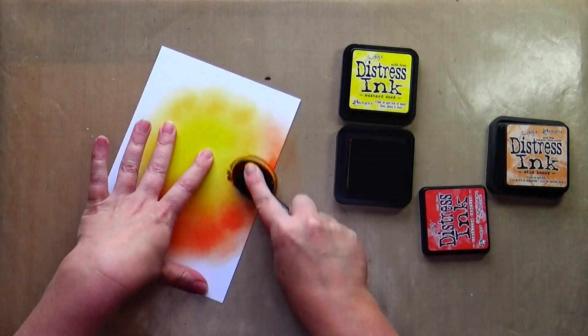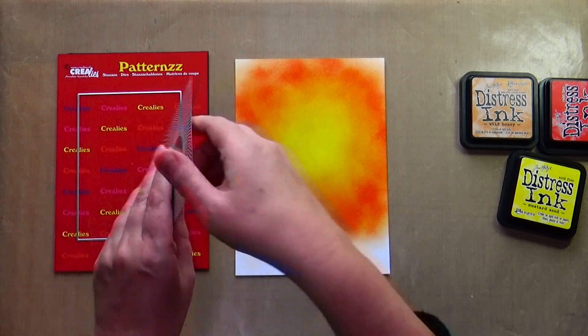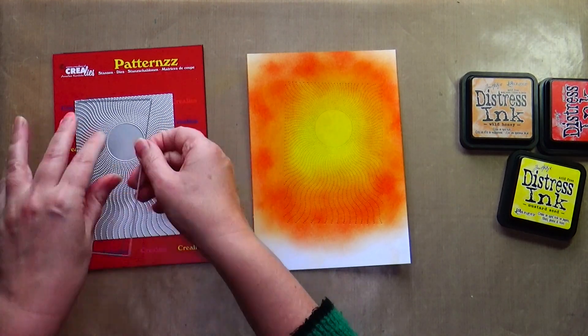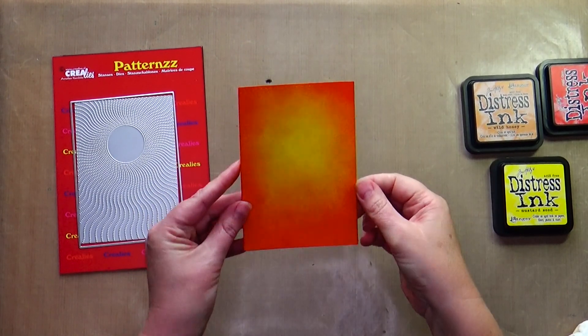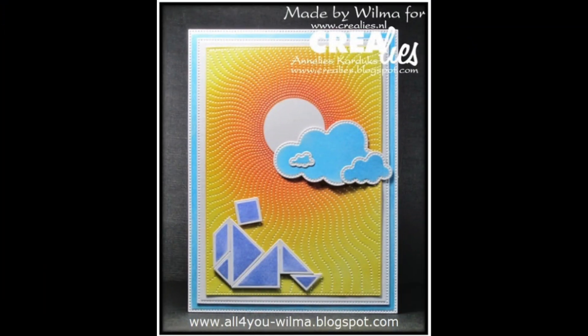You can give your cardstock a color first by blending with distress ink. Then you die cut the cardstock with a patterns plate and decide whether you want to use the outline die. Wilma made this beautiful card.